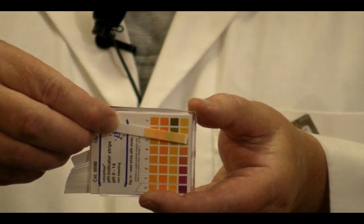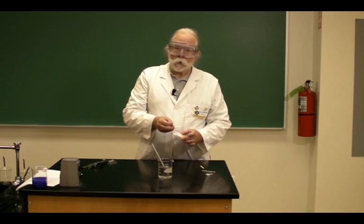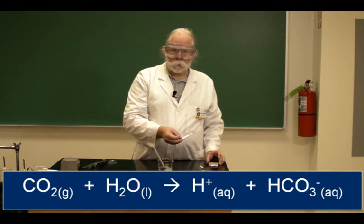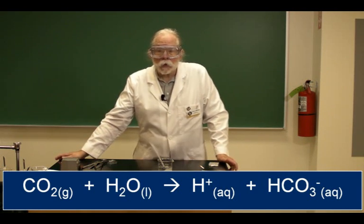pH 5 is an acid so the carbon dioxide has dissolved in the water and reacted. Thus my chemical reaction really has made hydrogen ions in the water meaning that the carbon dioxide gas dissolved and reacted.